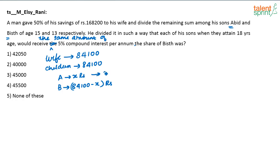Son A is 15 years old, so in 3 more years he will become 18. Therefore, x rupees must be invested at 5% compound interest for 3 years. Son B is currently 13 years old, so in 5 years he will become 18. The money is divided such that when each child turns 18 they receive the same amount — so we equate: x invested for 3 years equals (84,100 − x) invested for 5 years, both at 5% compound interest.